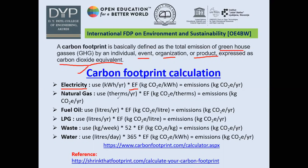Similarly, for natural gas we use therms per year multiplied by the emission factor to get kilograms of CO2 per year. For fuel, we use liters per year; for LPG, also liters per year; for waste, kilograms per week multiplied by 52; and for water, liters per day multiplied by 365 — since waste is recorded per week and water per day, but both are ultimately calculated on an annual basis.